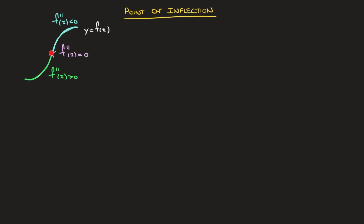So a point of inflection is a point at which the second derivative equals zero, and as we move across that point, the second derivative changes sign — either positive to negative, like what we see here, or from negative to positive. Here we have another point of inflection at which f''(x) equals zero. To the left, the curve is concave down so f''(x) is negative, and to the right the curve is concave up so f''(x) is positive.